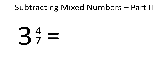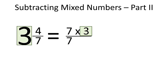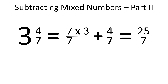Now let's check the answer. As a first step, we have to represent each fraction as an improper fraction. Let's start with 3 and 4 over 7. The whole was divided into 7 parts — we know that because there is a 7 in the denominator. So 1 whole is equal to 7 over 7. As we have 3 wholes, we multiply the numerator by 3, then add 4 over 7. That way, we represented 3 and 4 over 7 as 25 over 7.